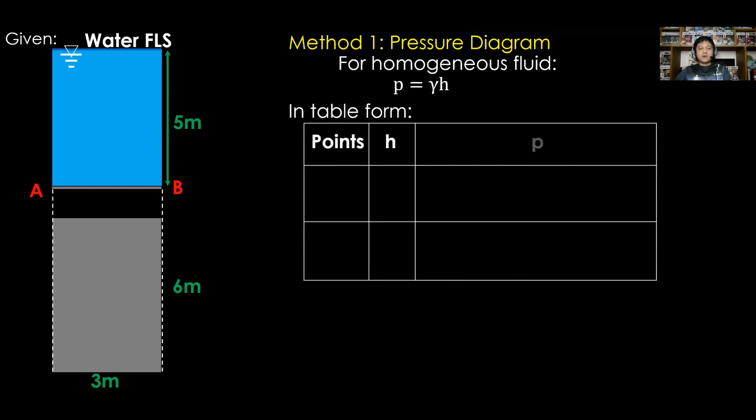Presenting in table form, identify for our column the points, H, and pressure P. For points we have A and B. For H, measured from free liquid surface, at point A, H is 5 meters, and at point B, 5 meters as well.